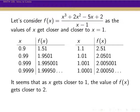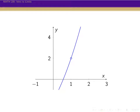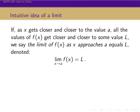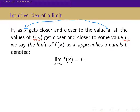So as we get closer to 1, both from values less than 1 and from values bigger than 1, it seems like the value of f(x) gets closer and closer to 2. Here's a plot of that function. As you can see, we have a circle at x equals 1, denoting that we can't actually get a value there. But on either side, we have this nice smooth curve leading right towards the y-value 2. This gets us to the intuitive idea of a limit: as x gets closer and closer to the value a, all the values of f(x) get closer and closer to some value L. Then we say that the limit of f(x) as x approaches a equals L.